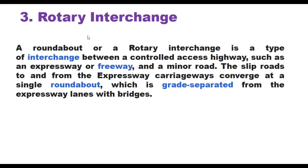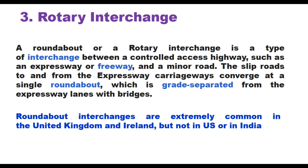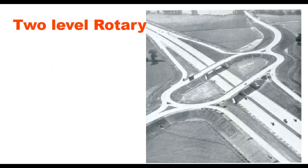The third type is the rotary interchange. A roundabout or rotary interchange is a type of interchange between a controlled-access highway such as an expressway or freeway and a minor road. The slip roads to and from the expressway converge at a single roundabout, which is grade-separated from the expressway lanes with bridges. Roundabout interchanges are extremely common in the UK and Ireland but not common in the US or India. In a two-level rotary, the rotary is at the second level and the expressway is at ground level; the size of the roundabout determines ease of turning movement.